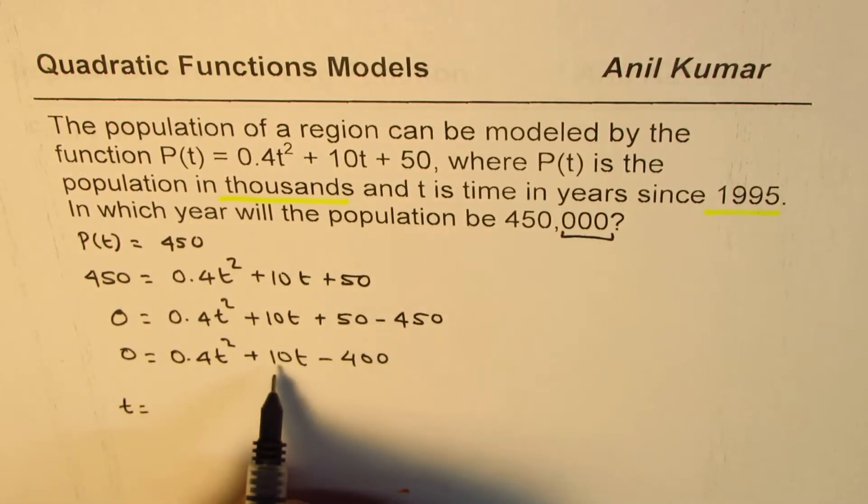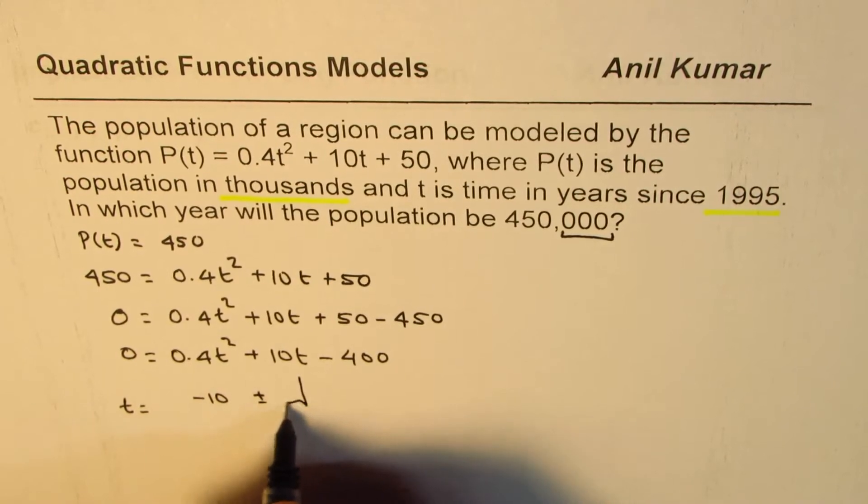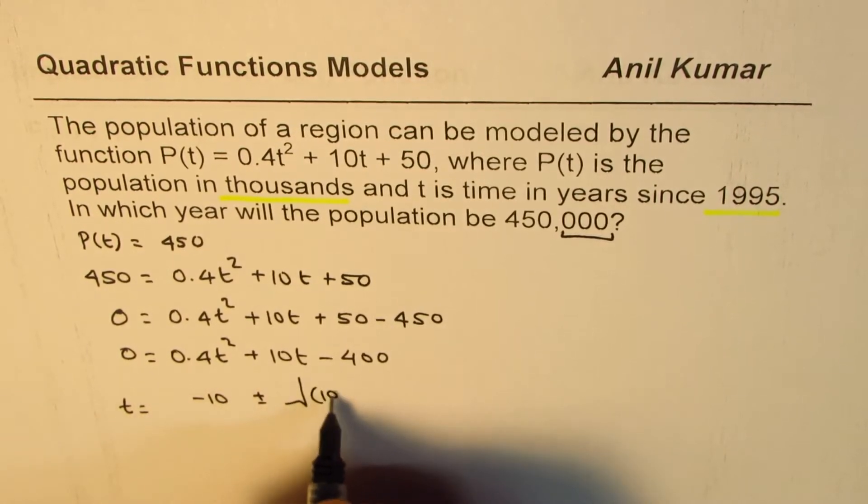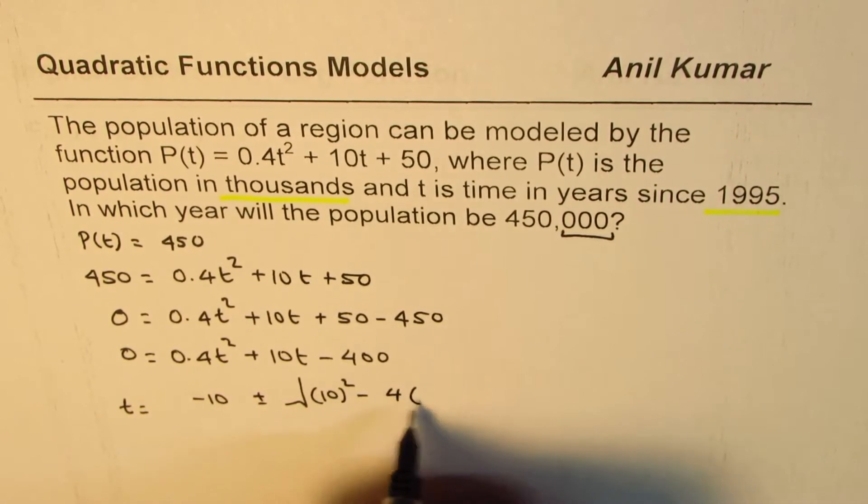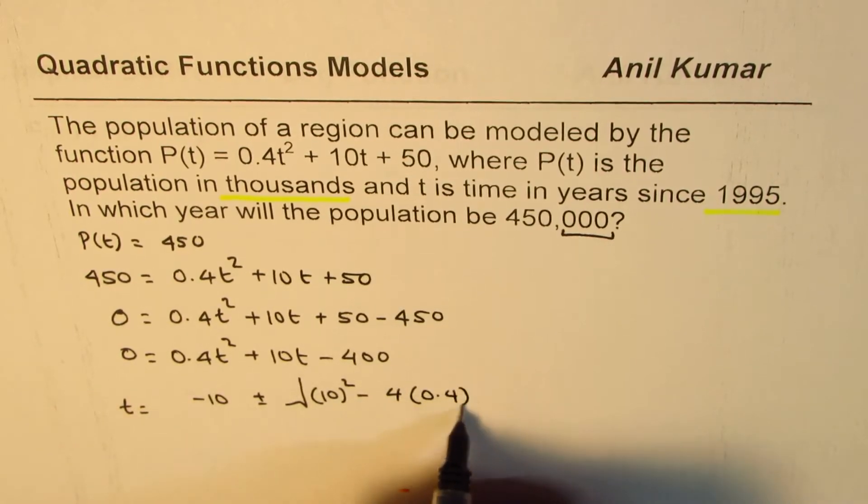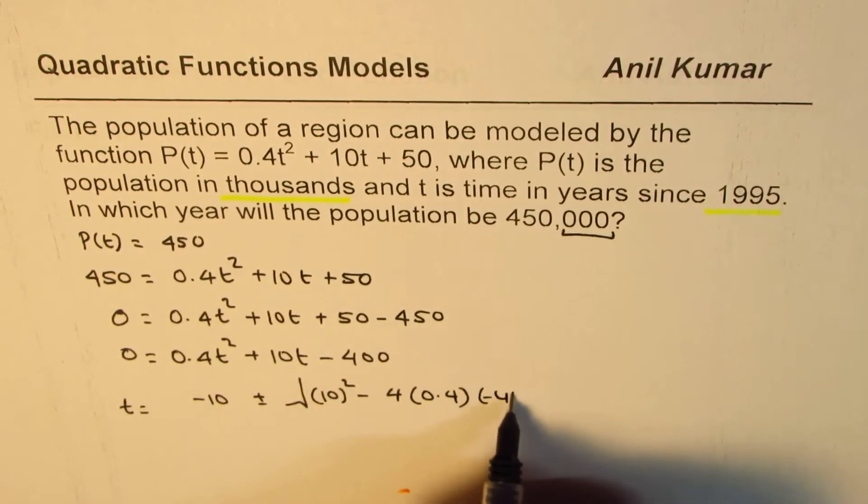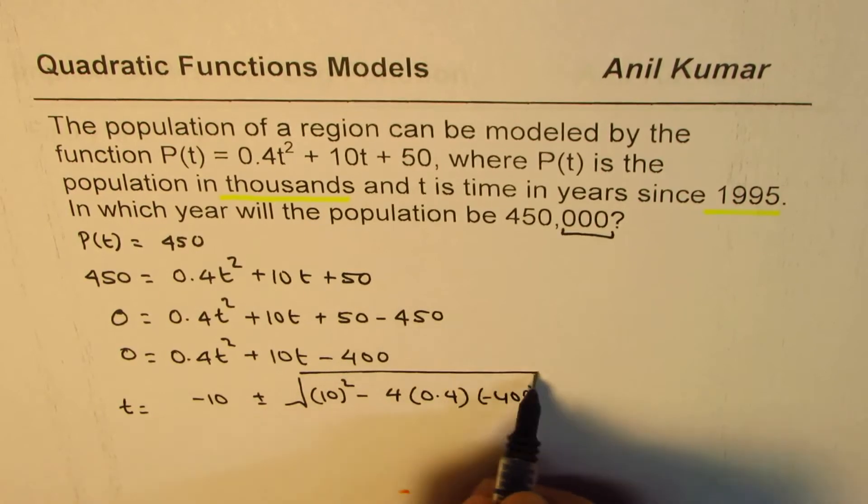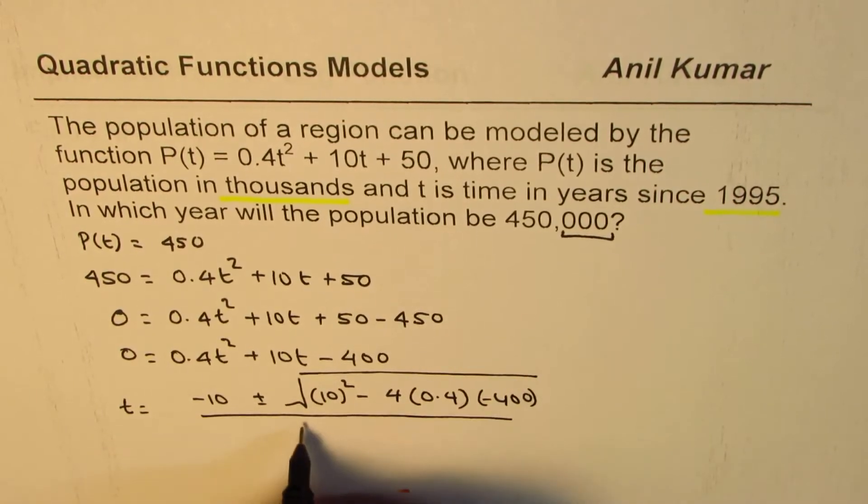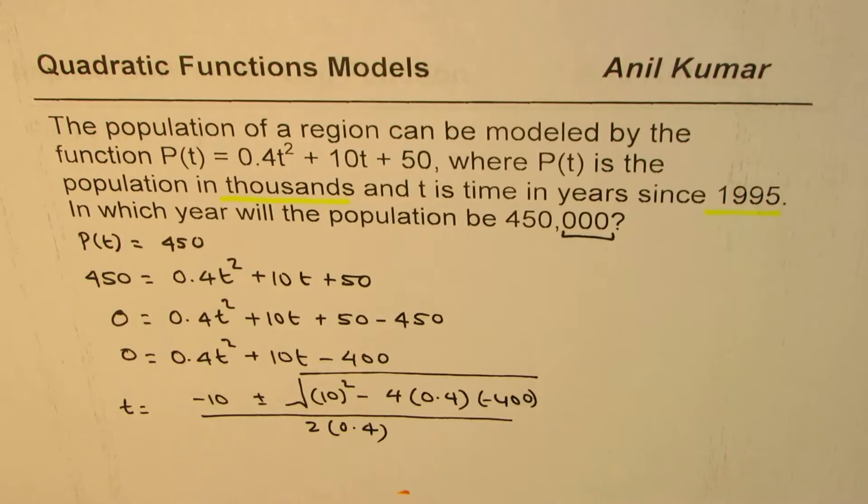use the quadratic formula, minus b, which is -10 plus minus square root of b², 10² minus 4 times a, which is 0.4, times c, which is -400, divided by 2 times 0.4. Perfect.